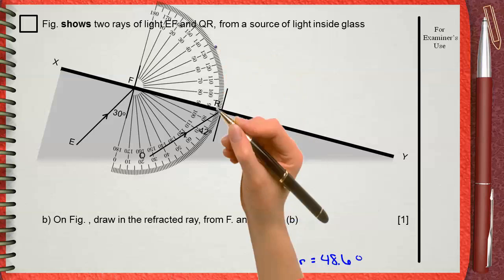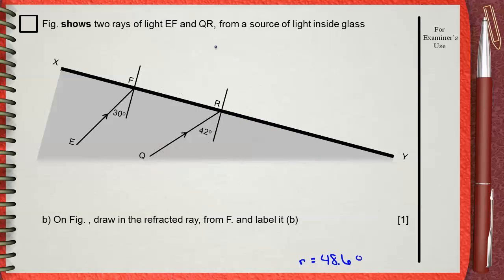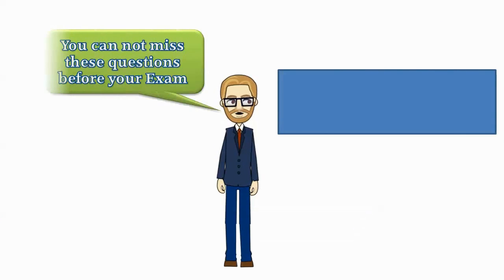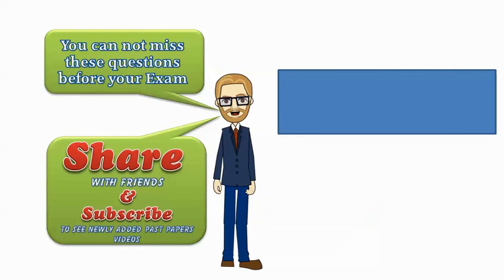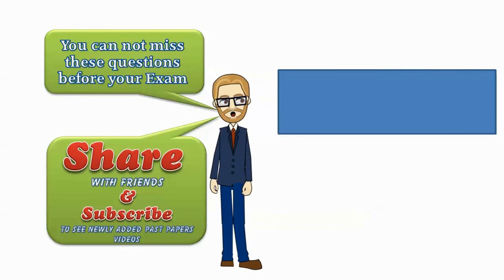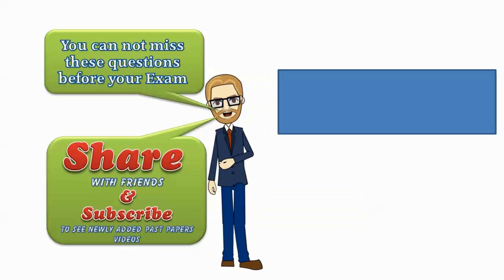Now remove the protractor and draw a line from F to the point you just made. This line indicates how your line refracted away from the normal. This is our angle 48.6. The question says, label this line as B.